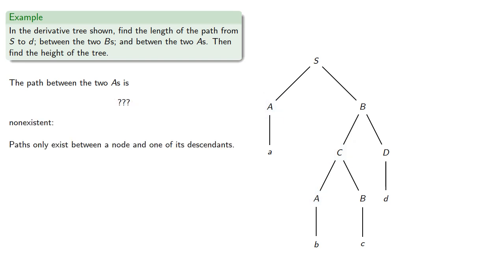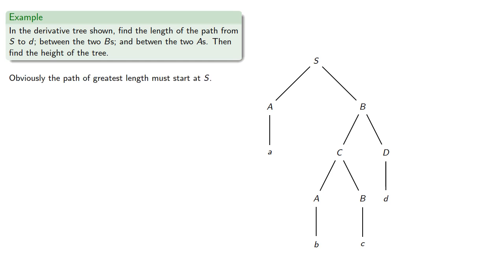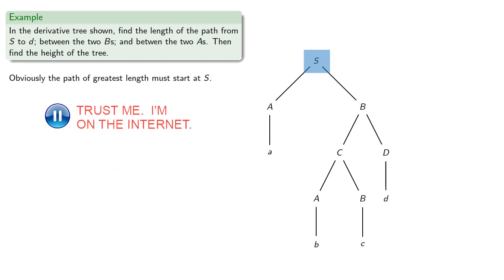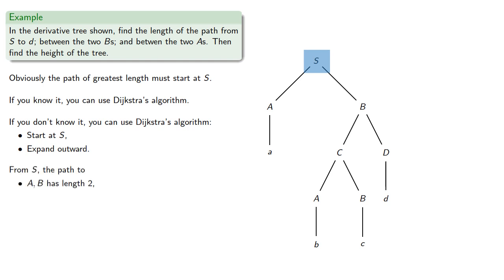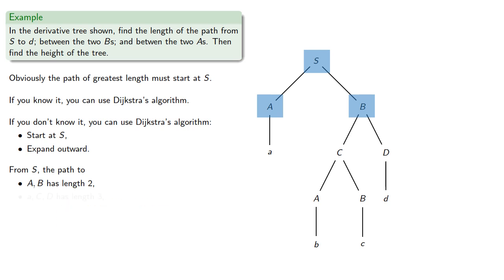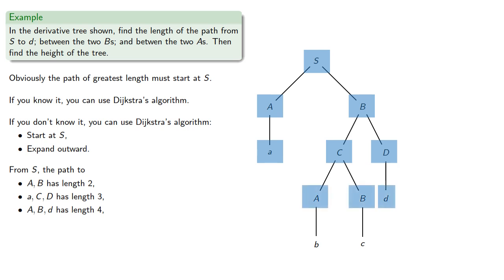Remember, paths only exist between a node and one of its descendants. So the path of greatest length must start at S. Expanding outward from S: the path to A and B has length 2, to C and D has length 3, to A, B, and D has length 4, and to B and C has length 5. So the height of the tree is 5.